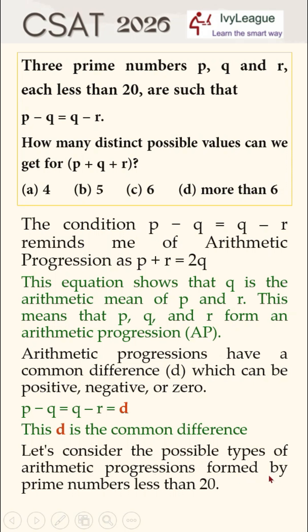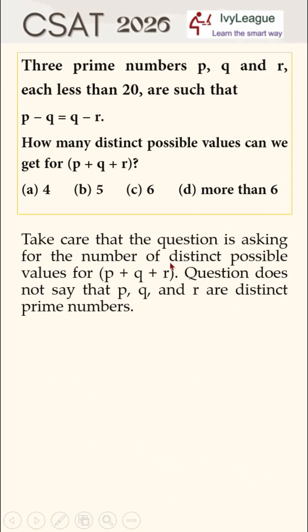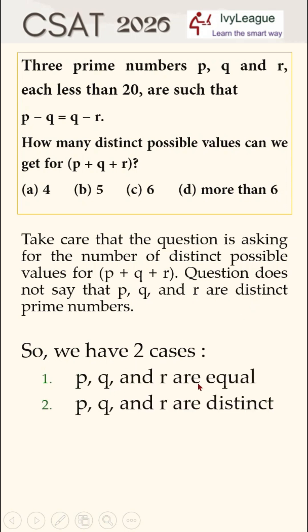Let's consider the possible type of arithmetic progressions formed by prime numbers less than 20. Take care that the question is asking for the number of distinct possible values of p plus q plus r. The question does not say that p, q, and r are distinct prime numbers. So we actually have two cases: p, q, and r can be same and equal, or p, q, and r can be distinct and different.